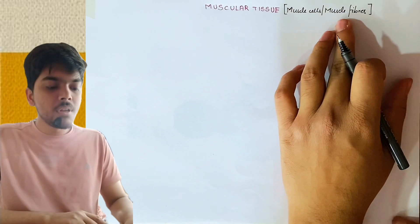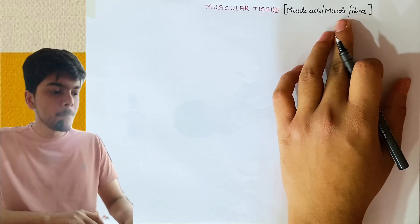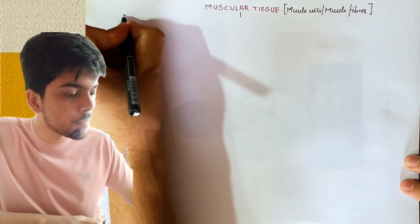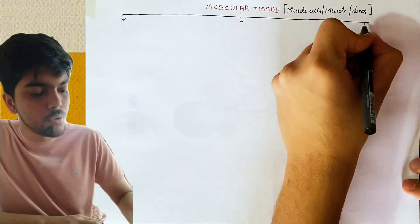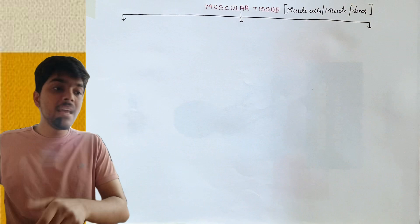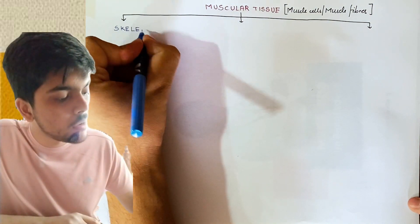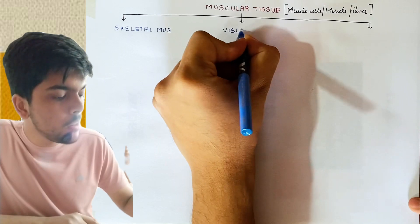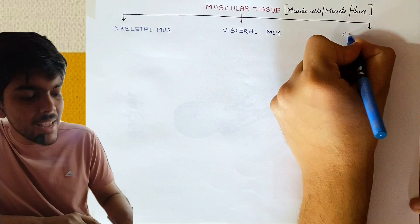Muscle fibers or muscle cells will have a video of their own because the structure itself is quite complicated. But in this video, what we are going to see are the types of muscular tissue. Muscular tissue is majorly divided into three types: number one, skeletal muscle; number two, visceral muscle; and number three, cardiac muscle.